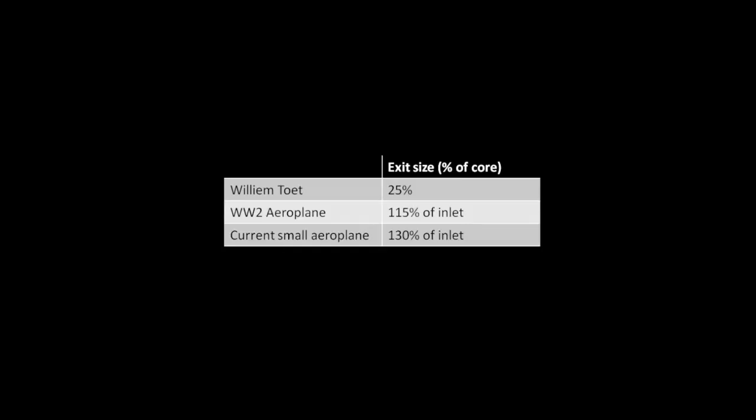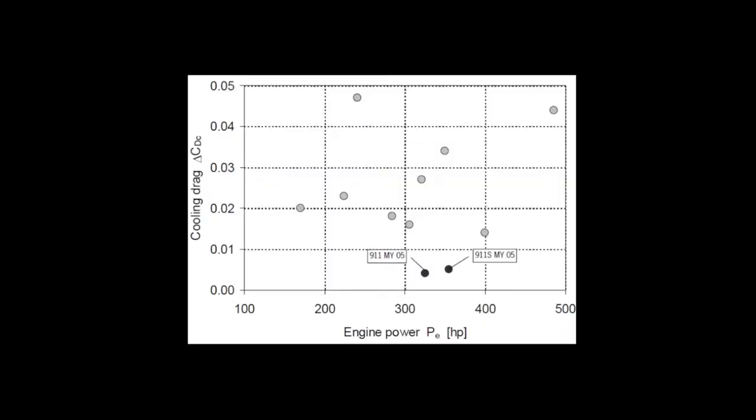The next question is how big an exit should we start with? The only recommendation I could find was from William Toet, who recommends 25% of the core. We can look at the aviation industry for inspiration, as long as we only look at planes where the speed isn't high enough that we need to worry about compressed air. And we can see that they run an exit area of somewhere in the range of 115% to 130% of the inlet, which is about the same as William Toet. His exit area size recommendation is 125% of his recommended inlet size.